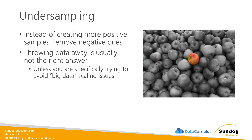The other approach is undersampling — instead of creating more of your minority cases, remove the majority ones. In the case of fraud, that means removing some non-fraudulent cases to balance things out. However, throwing data away is usually not the right answer. You're discarding information. The only time undersampling might make sense is if you're trying to avoid a scaling issue — maybe you have more data than your hardware can handle. If you have too much data to process, fine, throw away some of the majority case. But the better solution would be to get more computational power and scale out on a cluster. So undersampling is usually not the best approach.